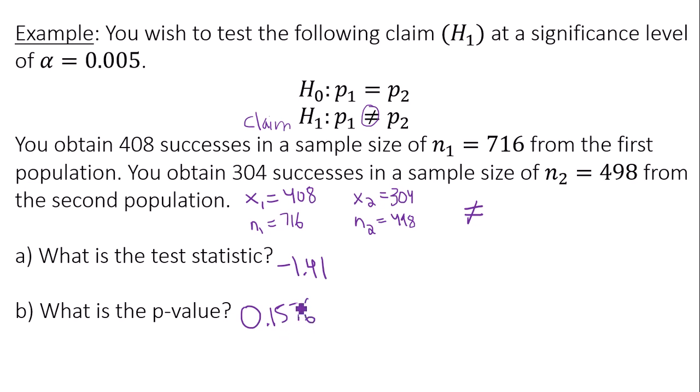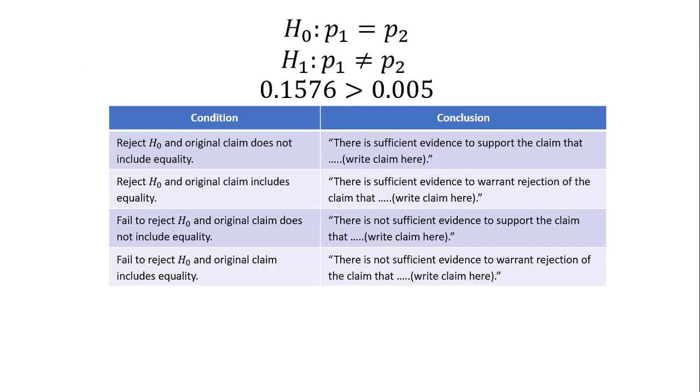So now using the p-value, let's compare it to our value alpha. So remember, our claim was the alternative hypothesis here. Our p-value was 0.1576. And our alpha value was 0.005. They gave this to us in the question.